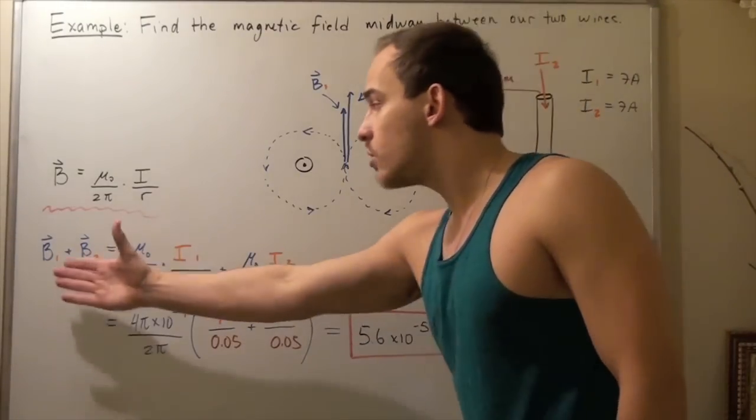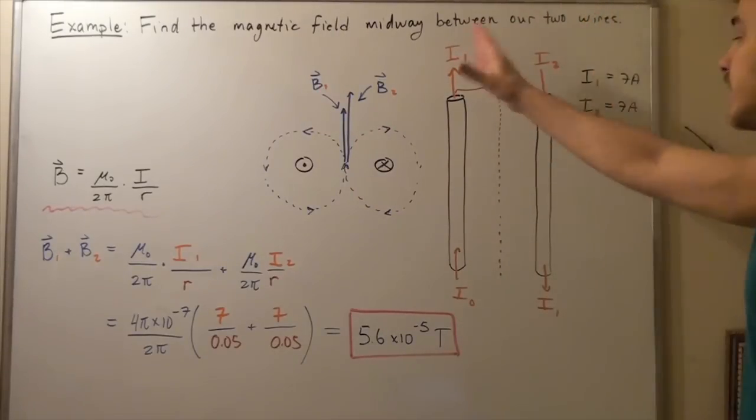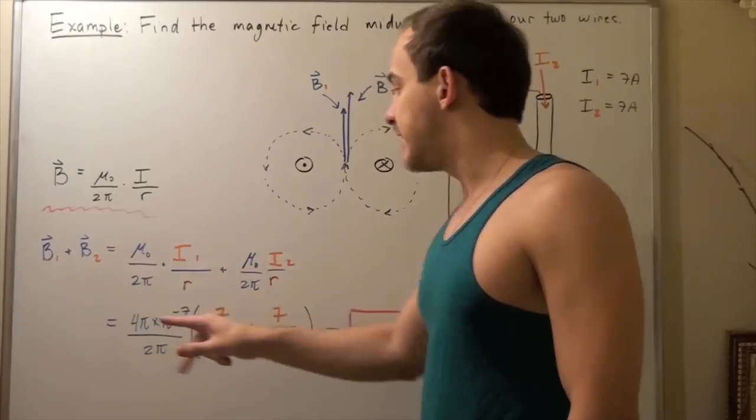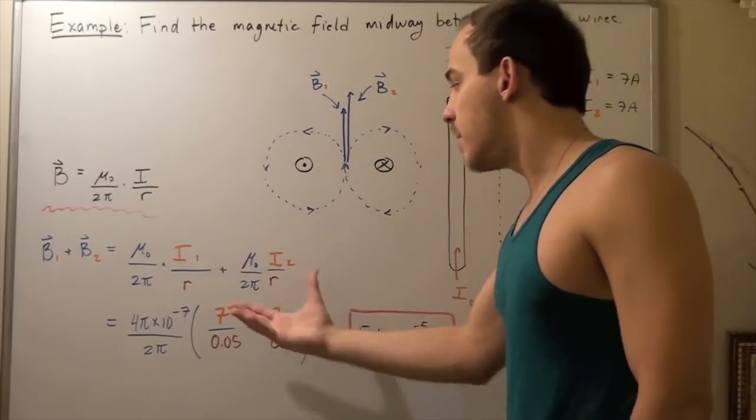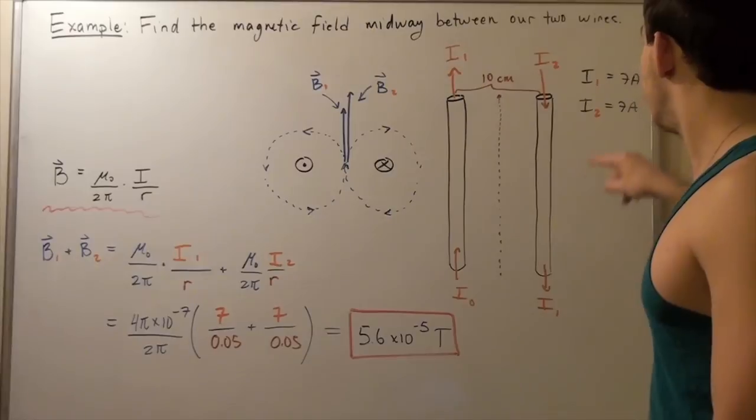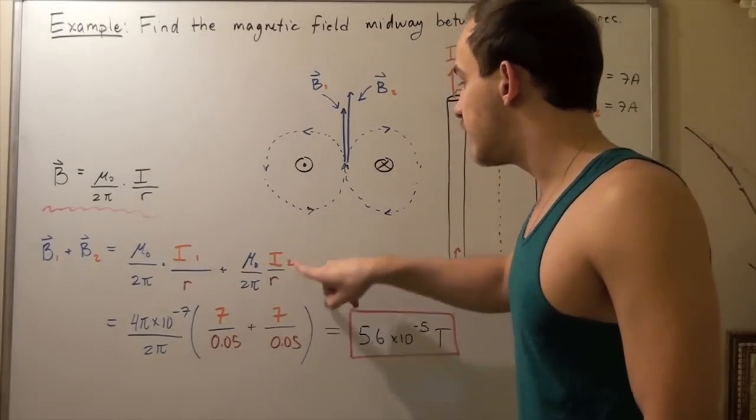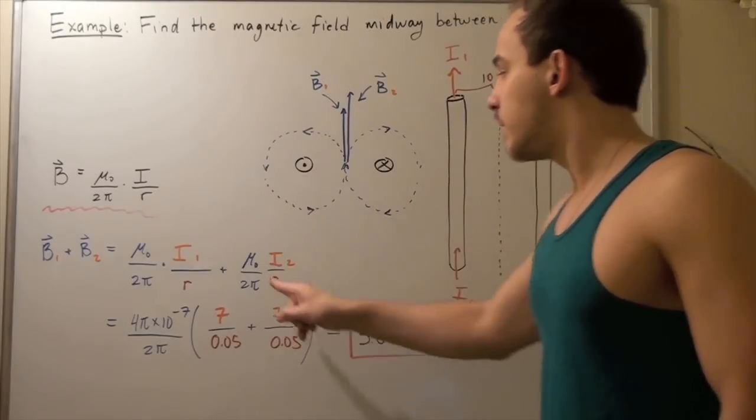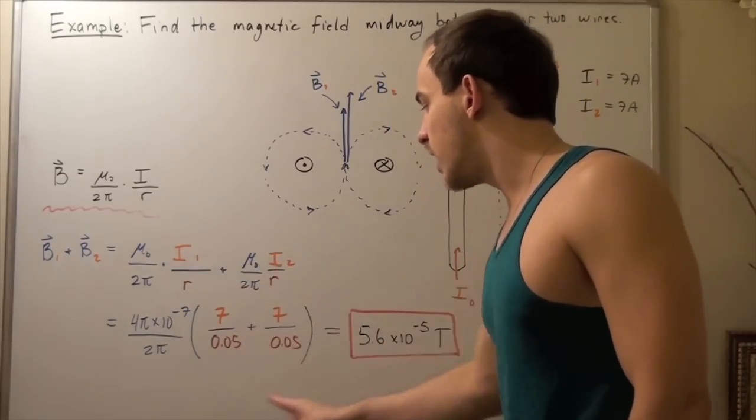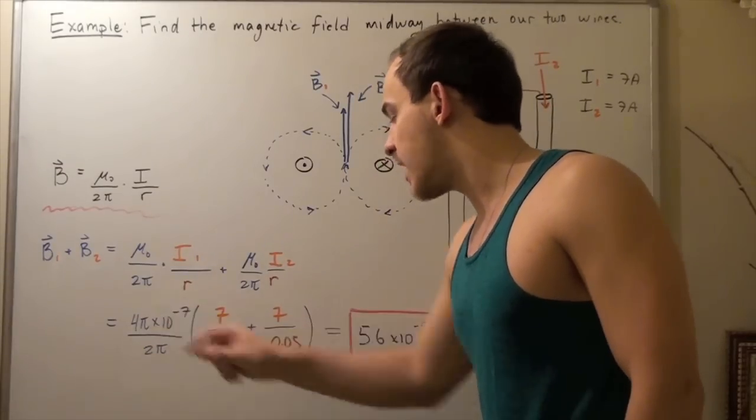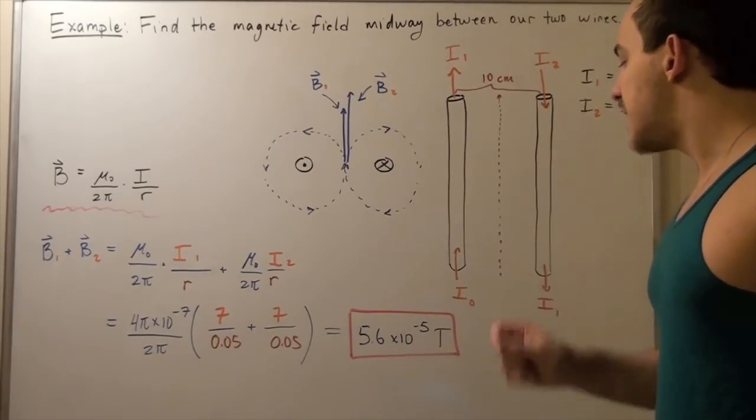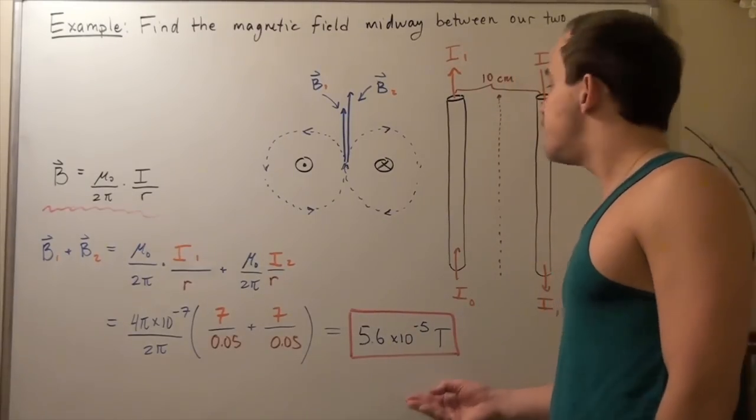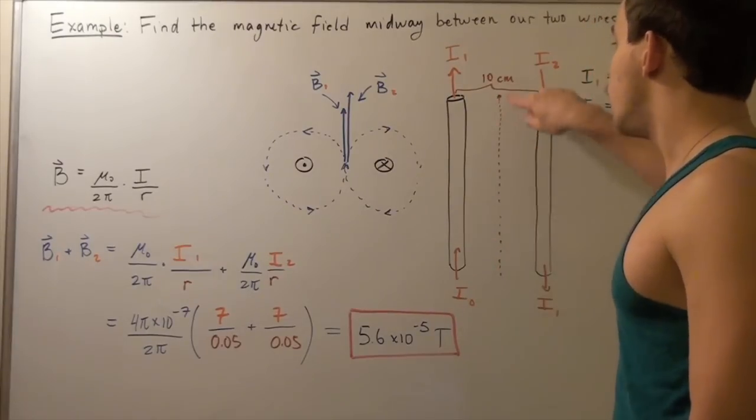So to find my total or net magnetic field midway between my two wires, I simply add up B1 and B2. So I add them up. I plug in all my information. So I plug in 7 amps here and 7 amps here. Then I plug in 0.05 meters for both cases. And I take out my common term. I add these two up, multiply by the constant. And I get 5.6 times 10 to the negative 5 teslas. So this is the net magnetic field found midway between my two wires.